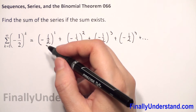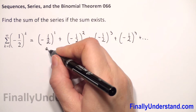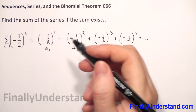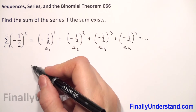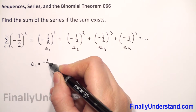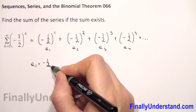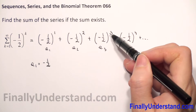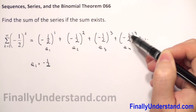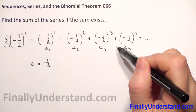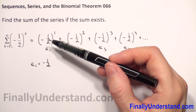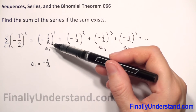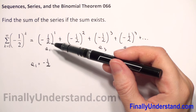We see here that we have terms — let's label them a1, a2, a3, a4, and so on. The first term a1 is negative 1 half to the first power, which is negative 1 half. Then a2 is negative 1 half squared, a3 to the third, a4 to the fourth. We can see that we have a geometric progression, because every term after the first is obtained by multiplying by the constant number negative 1 half.